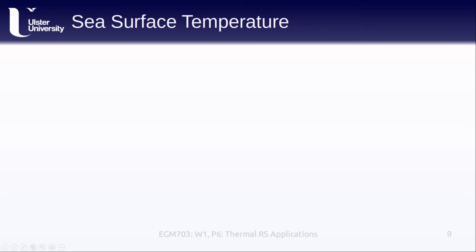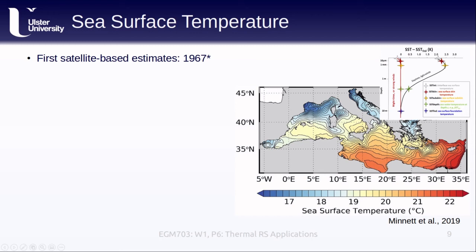The final application we'll cover is sea surface temperature. The first observations of sea surface temperature from space were made in 1967. One thing to keep in mind is what exactly we're measuring: what we measure with a satellite is usually the so-called skin temperature, marked by the red star here. This is the temperature emitted by the surface at a depth of approximately 10 micrometers for the wavelengths typically used in thermal infrared remote sensing. Depending on ocean conditions, this can vary significantly from the water temperature at even 1 millimeter's depth.